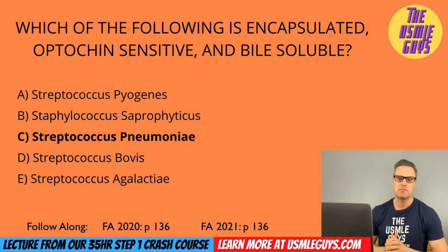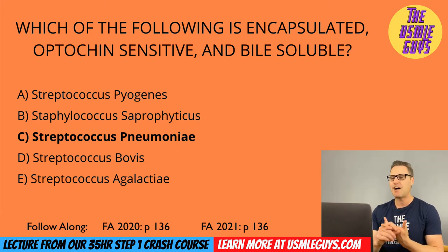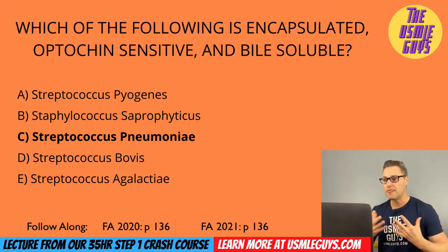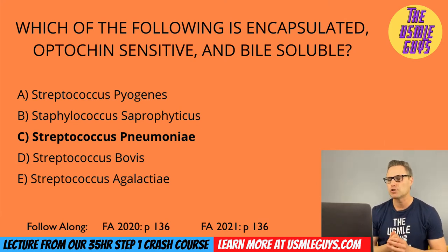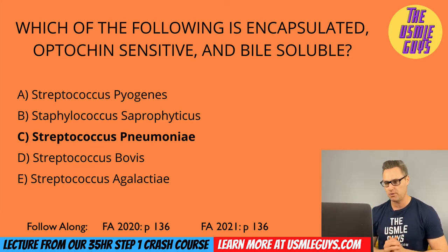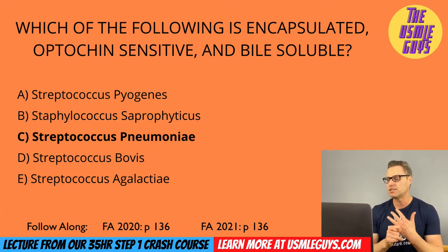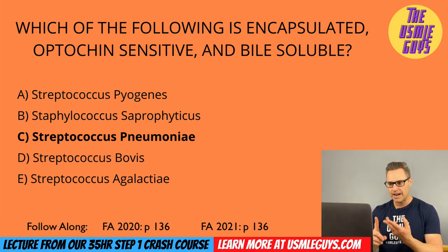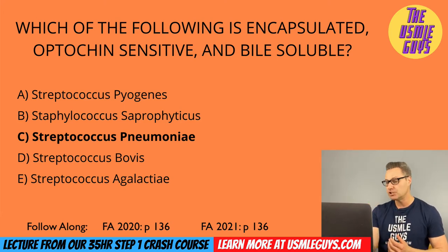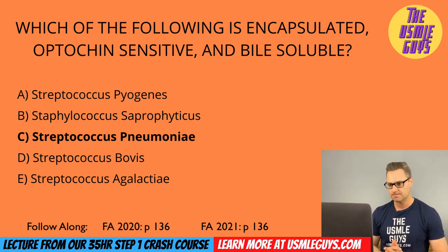The correct answer here is C — Strep pneumoniae. Strep pneumoniae is gram positive, alpha hemolytic, and a lancet-shaped diplococcus. It is encapsulated, which gives it its virulence. It is optochin sensitive and bile soluble, and it has an IgA protease. Important associations: it causes rust-colored sputum and is a common cause of sinusitis, meningitis, pneumonia, and in children, otitis media. In a sickle cell patient, it can cause sepsis.